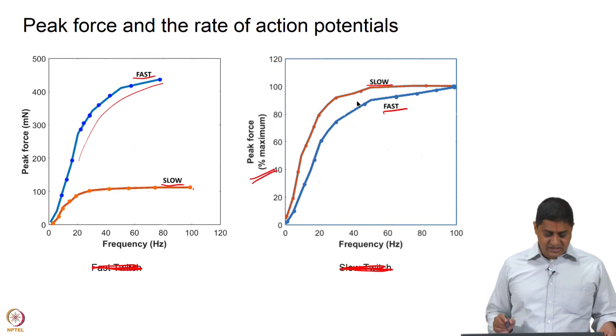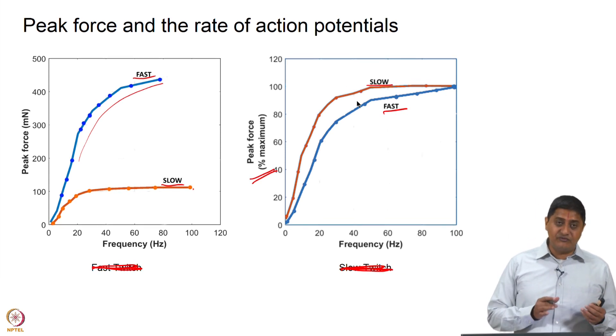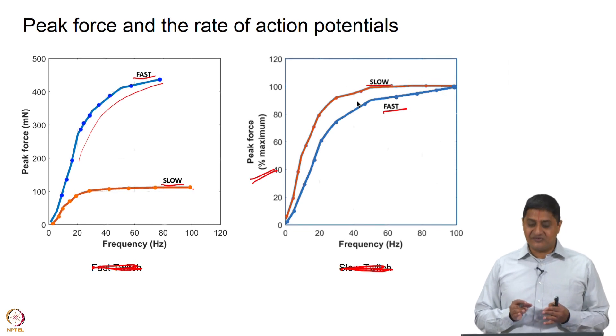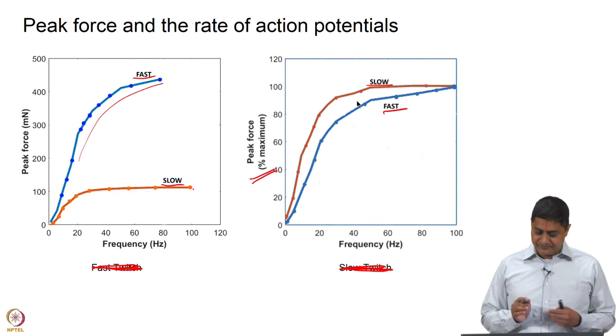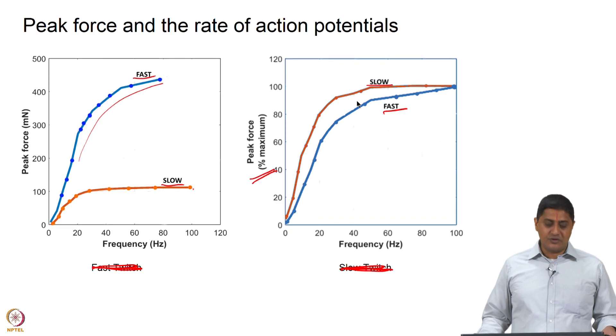These two plots represent the absolute force that is generated and the percentage force that is generated, not slow twitch and fast twitch fibers. Thank you.